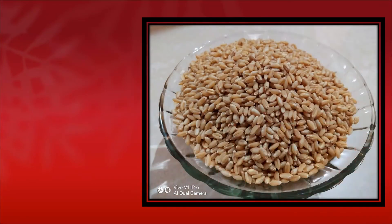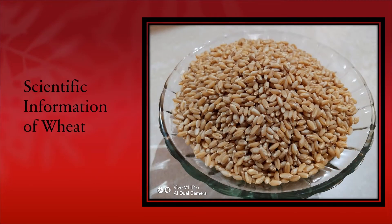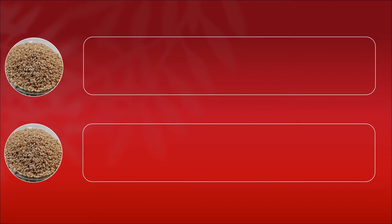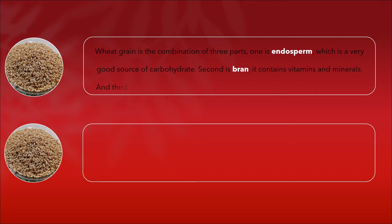Let's see the scientific information of wheat. Wheat grain is the combination of three parts. One is endosperm, which is a very good source of carbohydrates. Second is bran, which contains vitamins and minerals. And the third one is germ, which contains germ oil, commonly known as wheat germ oil.